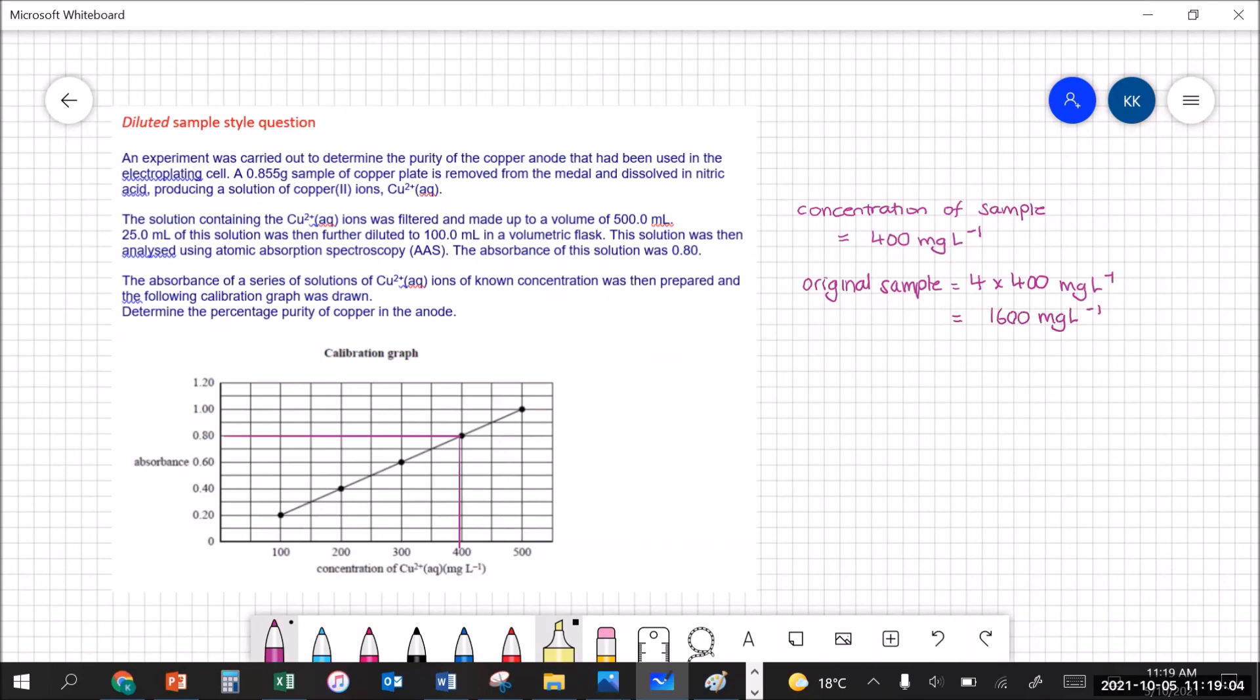So if the concentration of that 500 mils is 1600 milligrams per liter then to get the milligrams of copper we just multiply by the liters of solution. So there's 800 milligrams.